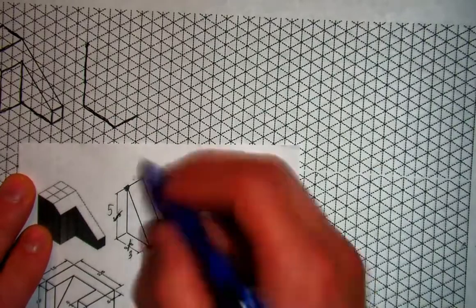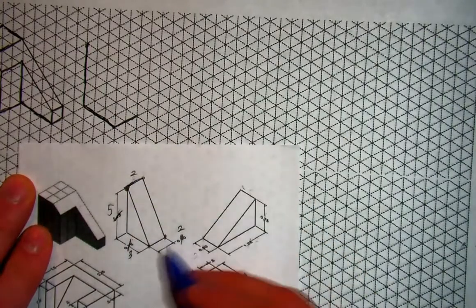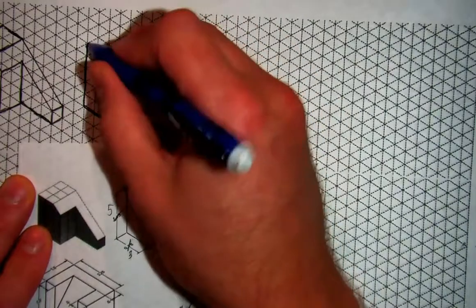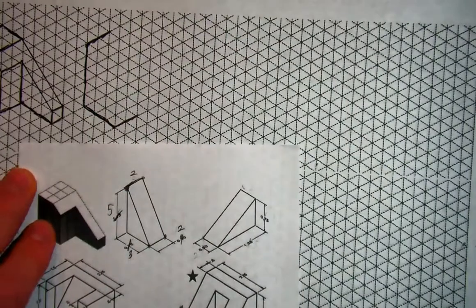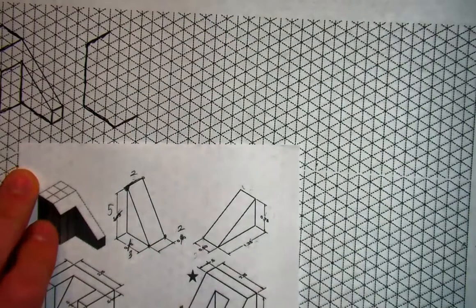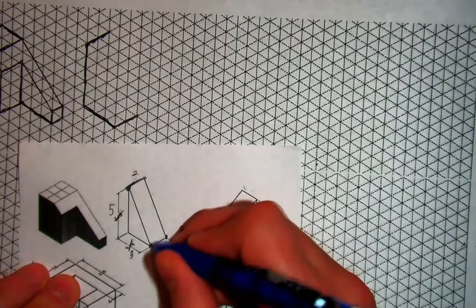And then I also know that this goes back two squares as well because the depth doesn't change from the bottom to the top. And so I can say this is 1, 2 as well. And that's all I know without including the slants, which I don't know the measurements of. But I do know the corners that connect.